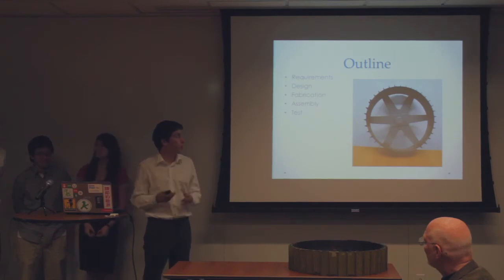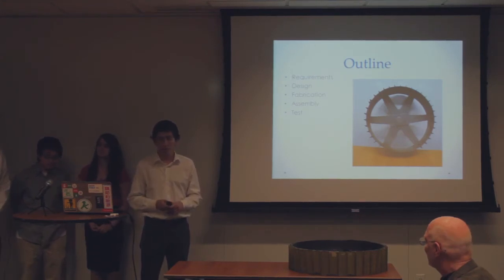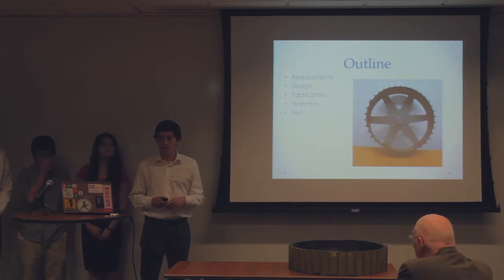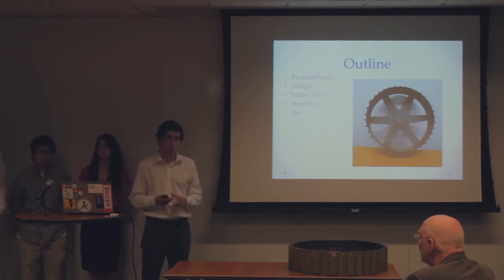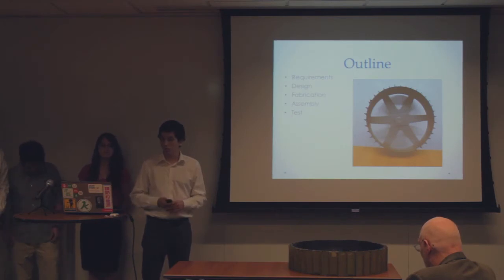First, to go over our outline, we're going to start by mentioning the design requirements we were faced with at the start of this project. We're going to talk about several of the designs we went through, our design processes, and finally the final design we moved forward with. We'll talk about how we fabricated the molds and the composite parts from those molds, then how we assembled all of our final composite parts together to make the final wheel, and lastly, our testing procedures and results from that, showing that the wheel will survive under all loading conditions.